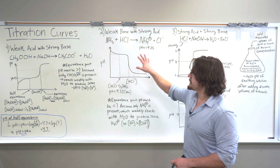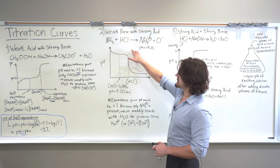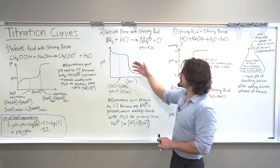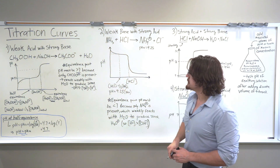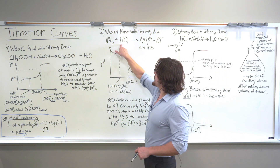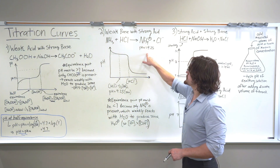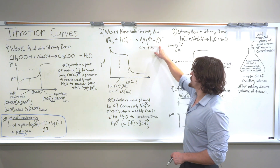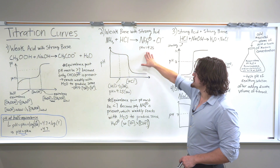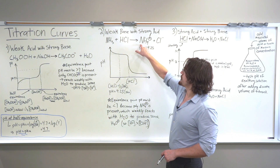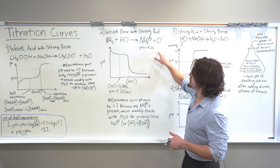Now let's look at another situation: a weak base with a strong acid. In this case we're using ammonia, which is a weak base. If we add hydrochloric acid, the ammonia will be converted into ammonium, its conjugate acid, plus chloride anion from the hydrochloric acid. The pKa of ammonium — remember, this is based on the conjugate acid — is 9.25.